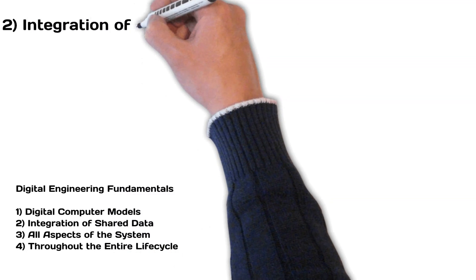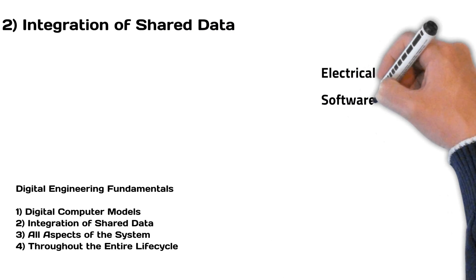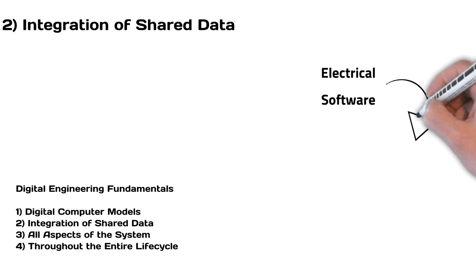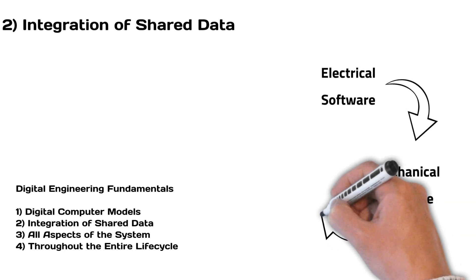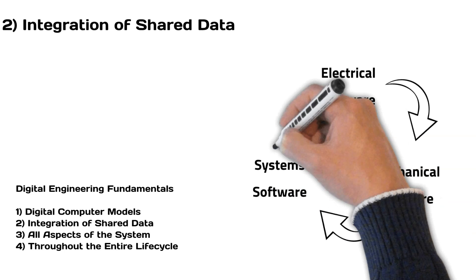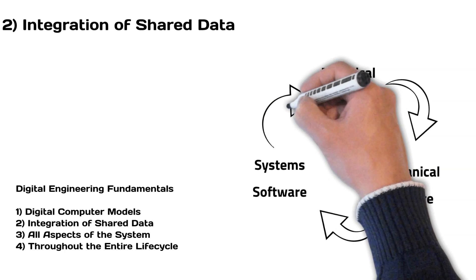Second, these model elements, or digital data, can be shared from one source to another. This means that an electrical engineer using ECAD software could share details about a wiring schematic to a mechanical engineer in his or her respective software. The systems engineer could then capture this data in software such as Cameo and present high-level metrics to leadership in a streamlined approach.